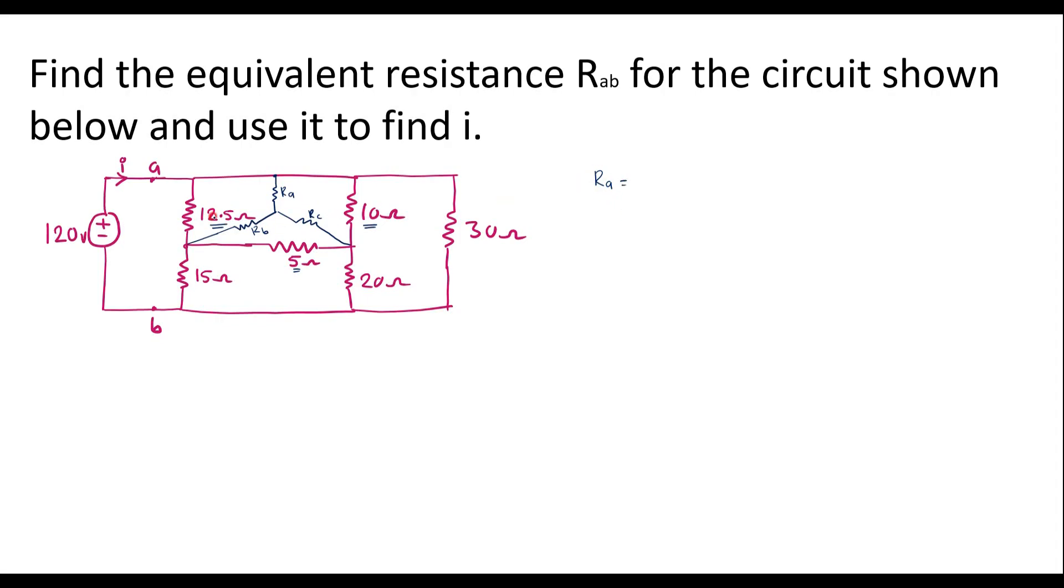I will convert this delta into star by using delta-star transformation. RA value is equal to this resistor into this resistor divided by sum of these three. That is 12.5 into 10 divided by 12.5 plus 10 plus 5. So solving this, this is 125 divided by 27.5. By solving this, we will get 4.545 ohm.